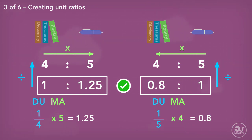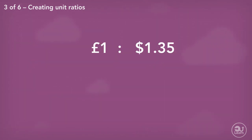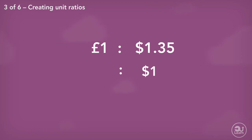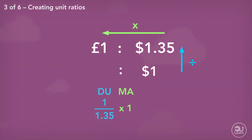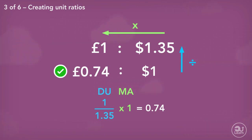Let's use this n to 1 unit ratio form to find out how many pounds one dollar is worth using our first ratio. Once again, we lay out our ratio and information, divide up and multiply across. This shows us that every dollar is equal to approximately 74 pence.